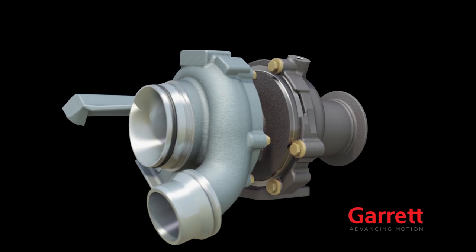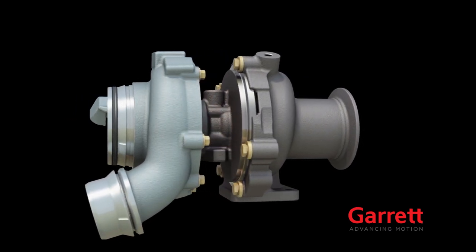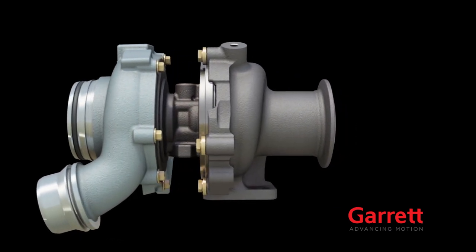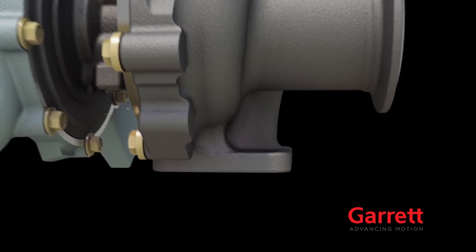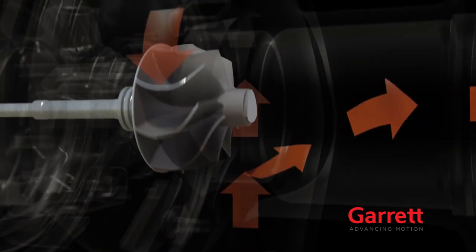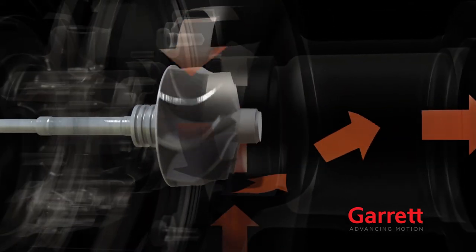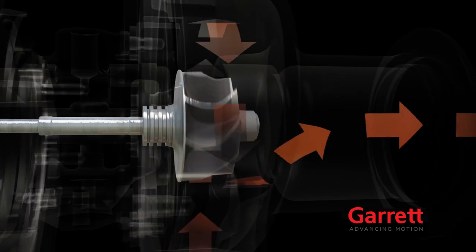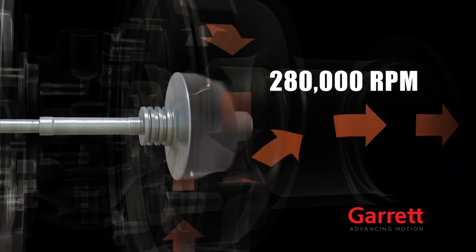To get more air into the engine, a turbocharging system starts with engine exhaust gas, power that is essentially wasted in non-turbo engines. This exhaust gas is channeled into the turbo where it spins a turbine wheel. This highly engineered wheel spins quite fast, reaching speeds of up to 280,000 rpm.